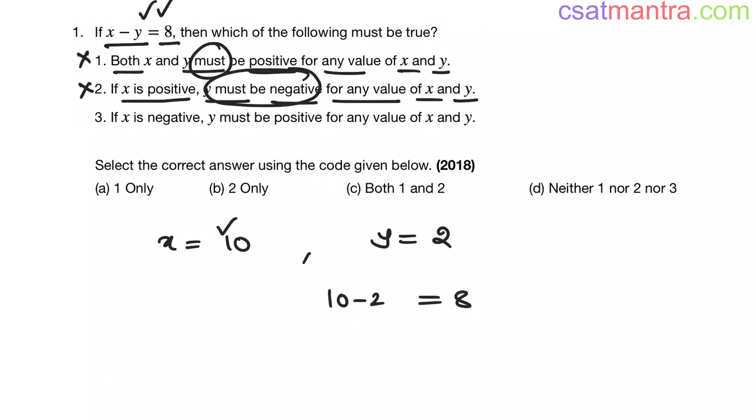When x is positive, y can be positive also. So conclusion one is incorrect, and conclusion two is also incorrect. Therefore, I can eliminate option a, option b, and option c also. Now our answer is option d, my friends.